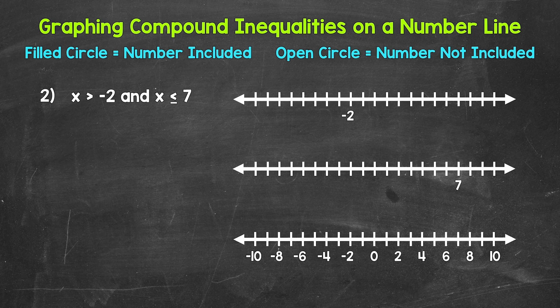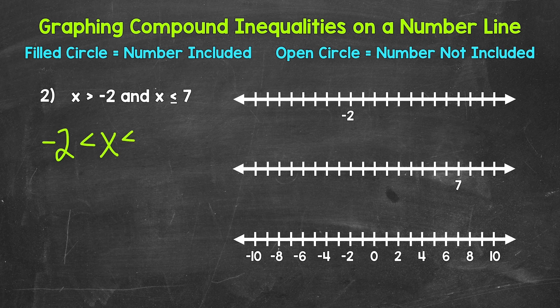Something I want to mention about compound inequalities involving AND: they can be written without the word AND in the middle. All we need to do is start with our variable x in the middle. So x is greater than negative 2 and less than or equal to 7 — that's our compound inequality written without the word AND. We can read this starting with the variable: x is greater than negative 2 and less than or equal to 7. Whenever you see a compound inequality written like this, it's a compound inequality involving AND — keep this in mind.